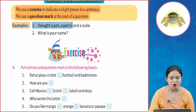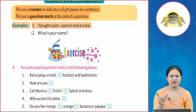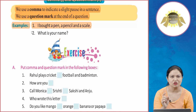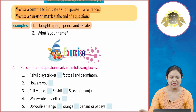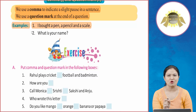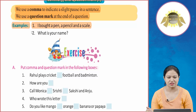For example: 'I bought a pen, a pencil and a scale.' We have given a statement and after listing 'a pen', we put a comma because we know there are more things to mention. So we use a comma after each item before listing the next one.